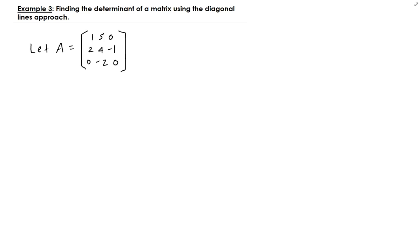Alright, so what we do is write down the original matrix and then you're going to take the first two columns and put them to the right of the matrix. So I'm gonna have 1, 2, 0 here and put the second column here 5, 4, minus 2.